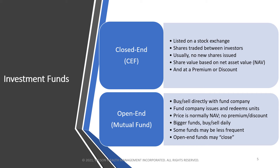What you find with closed-end funds is that they're subject to supply and demand, just like any common share. If a closed-end fund has strong management and investors want it — much like they want Amazon or Tesla stock — they're going to bid up the price. The owners won't be willing to sell, which drives demand and creates less supply, resulting in a premium. If it's trading at a discount, the opposite is true: maybe management isn't that good or investors aren't thrilled about the investment strategy, so more people want to sell than buy, and they have to sell for less than NAV.